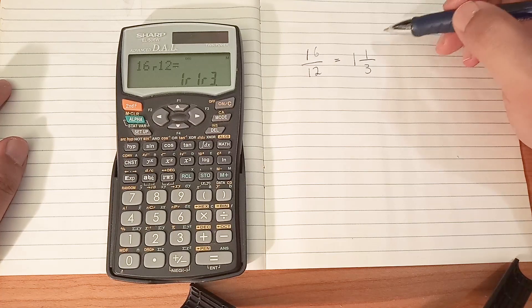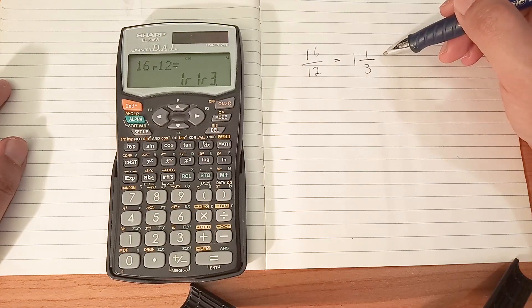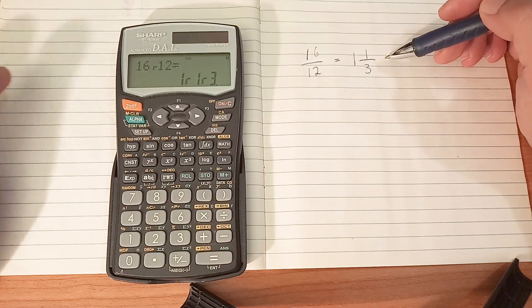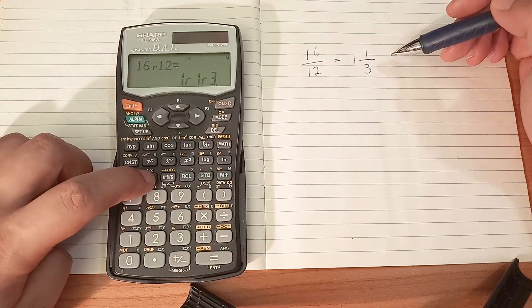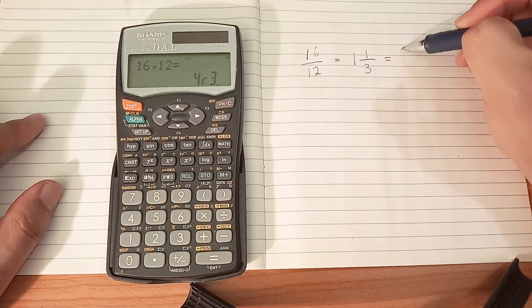Now if you're not used to this mixed number form and you want to express it as an improper fraction, you can simply press second function fraction key, and then you have 4 over 3.